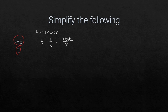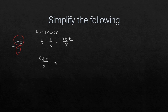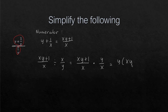Since the denominator is already a single rational expression, we don't need to do anything to it. The fraction bar separating the numerator and denominator represents division — so this is (xy + 1)/x divided by x/y. Applying the division rule, we multiply by the reciprocal, so this becomes (xy + 1)/x times y/x, which gives us y(xy + 1) all over x squared.